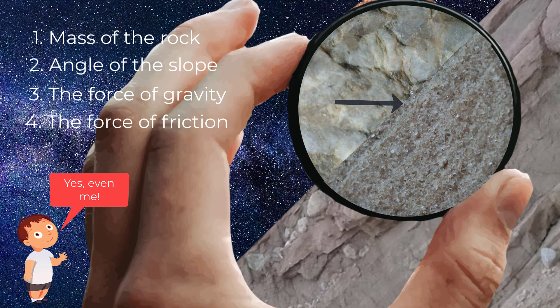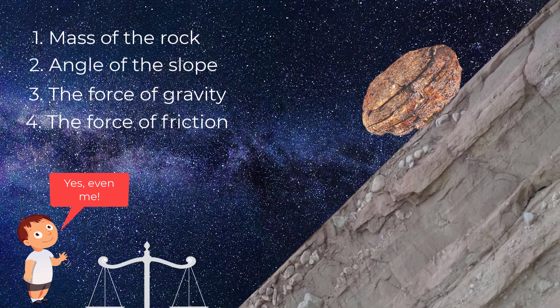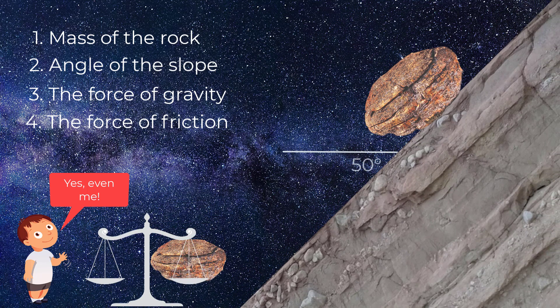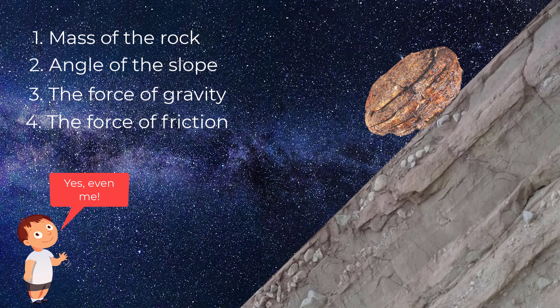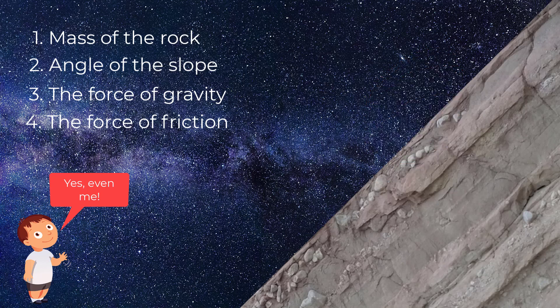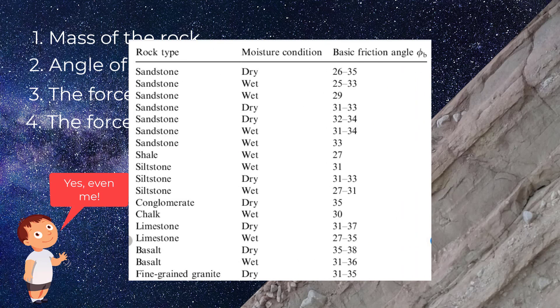Now that might sound difficult, but it's not. The mass of the rock and the angle of the slope are easy to figure out. The force of gravity near the Earth's surface is always the same and is calculated using an acceleration of 9.81 meters per second squared. Finding the numbers associated with friction is a little more difficult, but you can go online and find that number by looking at simple tables.